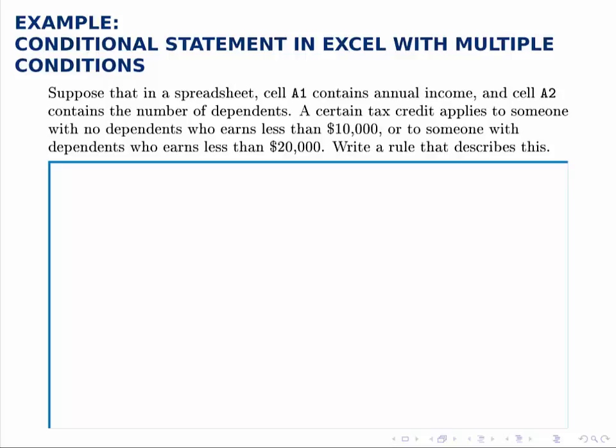In a spreadsheet, we have two things given. One is the annual income in cell A1, and the other is cell A2, the number of dependents. So we have income and the number of dependents.